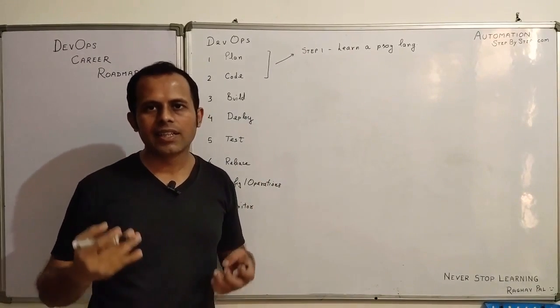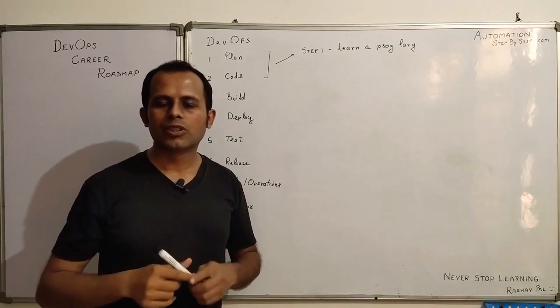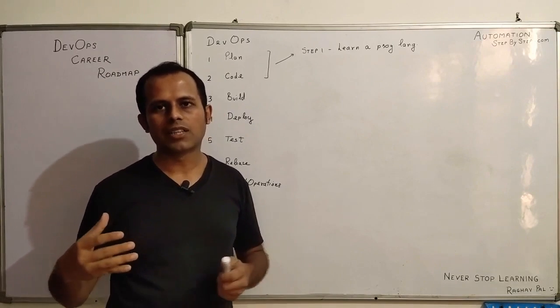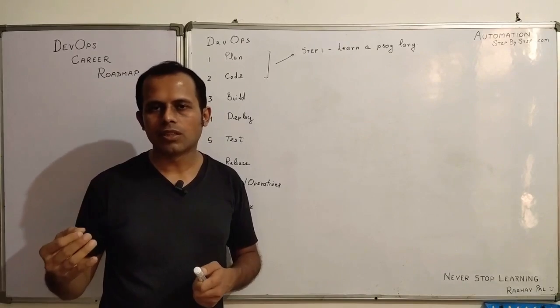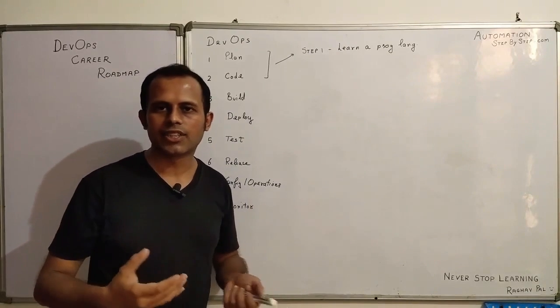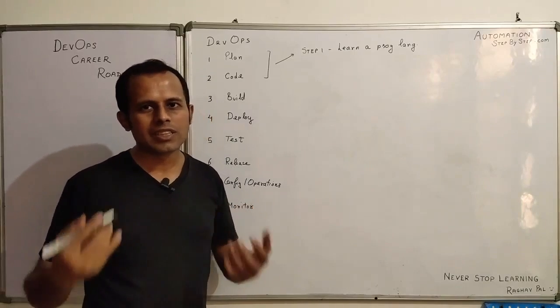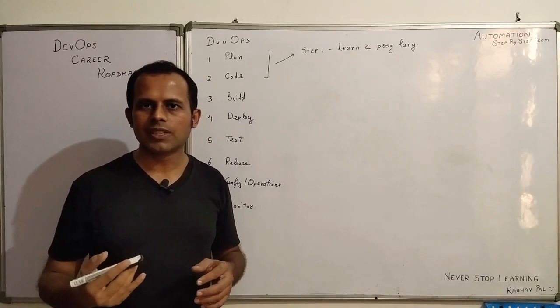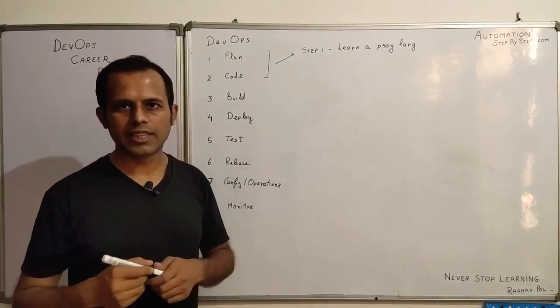When I talk about planning in DevOps, we can do planning using Excel sheets or using some specific planning software like Jira, etc.